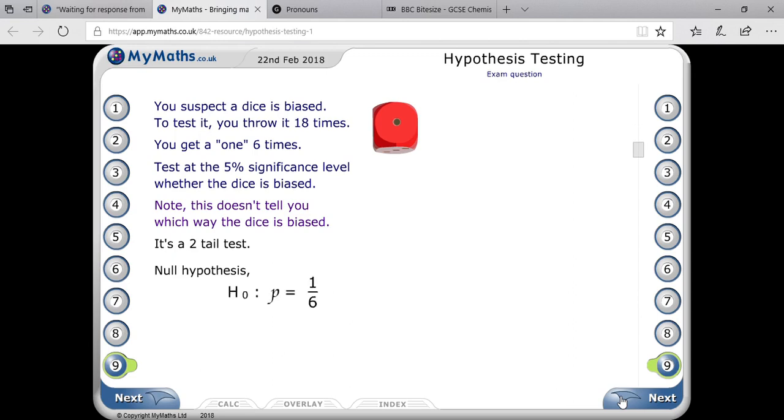Null hypothesis: H₀: μ = 1/6, because that one they are saying, so probability is one out of six, that means it will be 1/6. Alternative hypothesis: that will be not equals to 1/6. Then significance level they are saying five percent, whether the dice is biased.